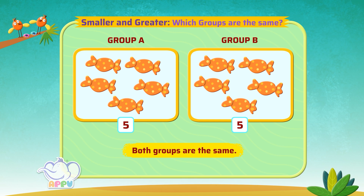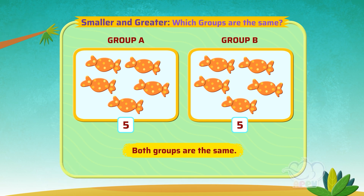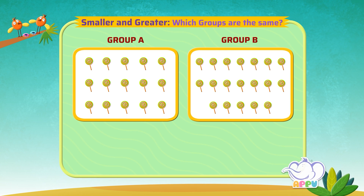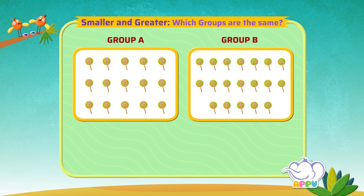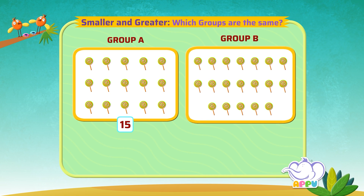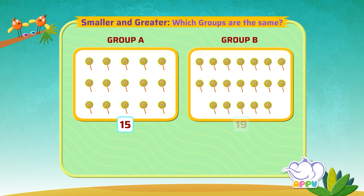Let's look at another example. Group A has 15 lollipops and group B has 19 lollipops.